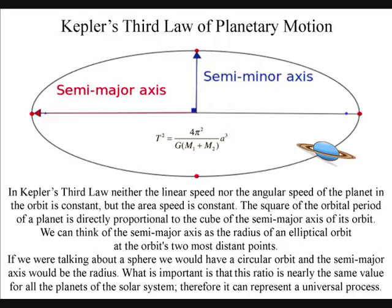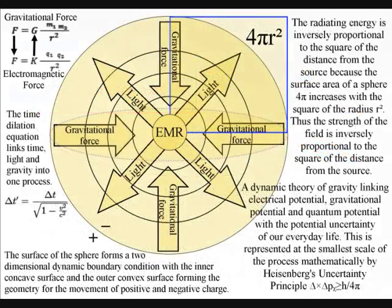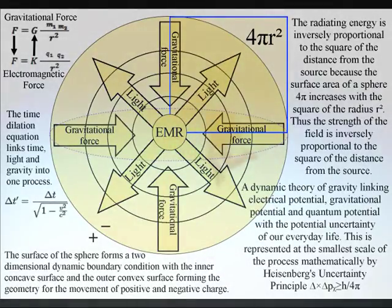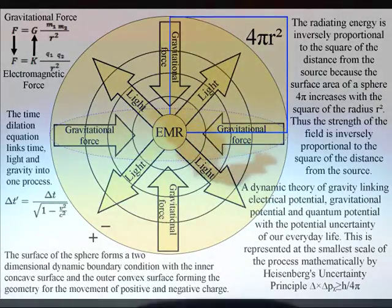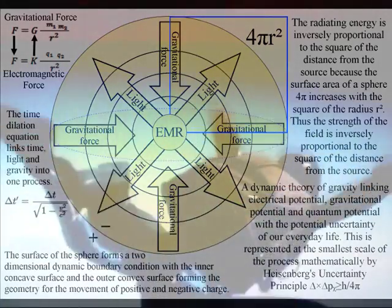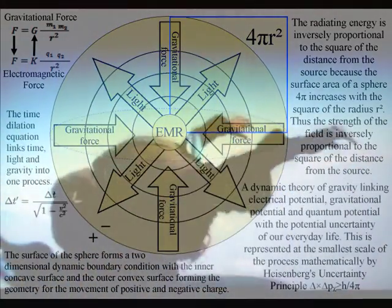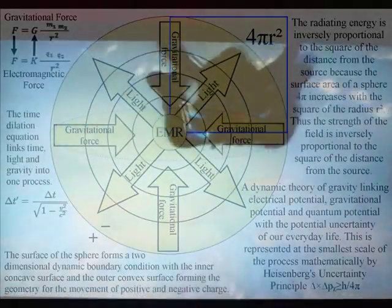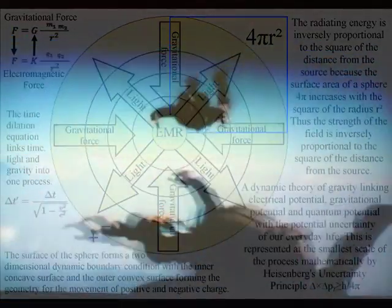Objects just freefall towards the greatest energy because it has the greatest time dilation or the slowest rate that time flows. Therefore gravity is a secondary force to the electromagnetic force because time is being formed photon by photon.